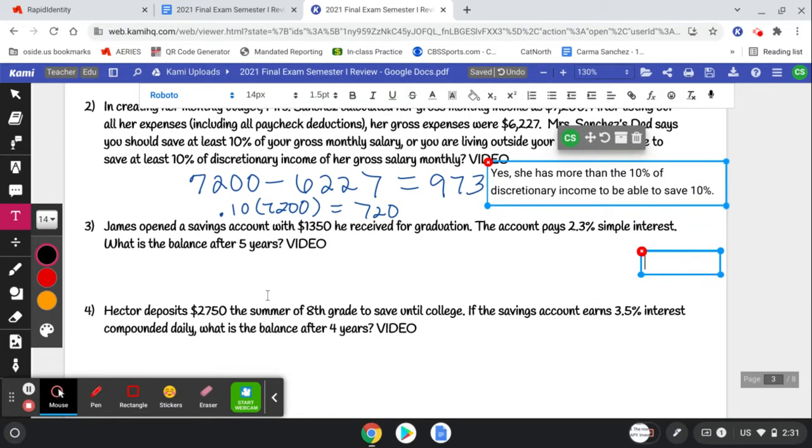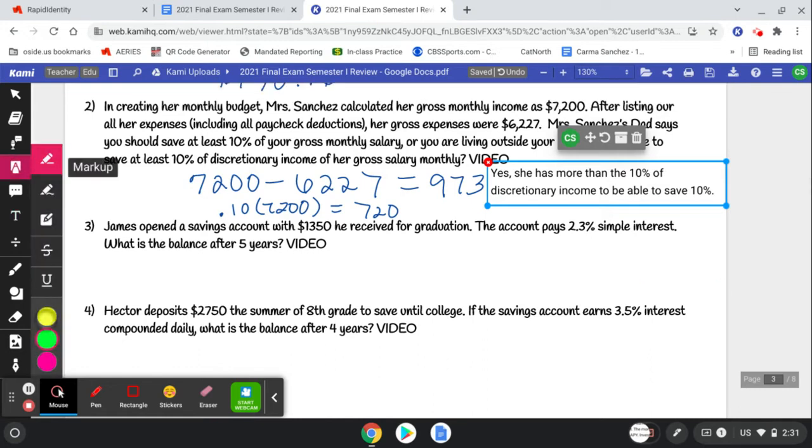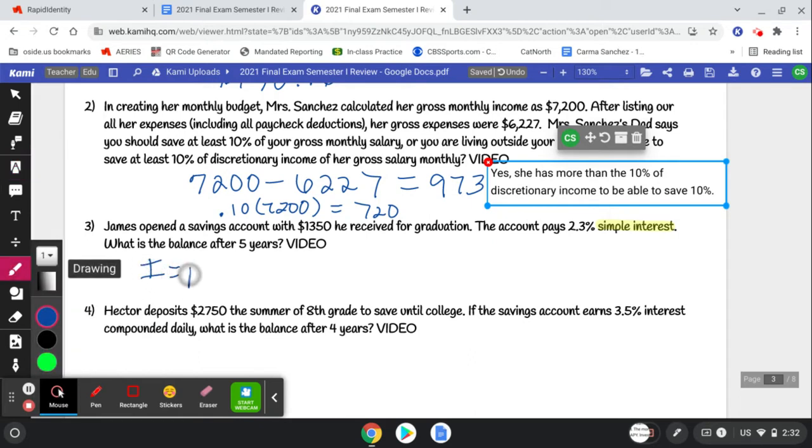James opens a savings account with $1350 he received for graduation. The account pays 2.3% simple interest. What's the balance after five years? We notice that this says simple interest, so we know we can go up to that banking sheet and use the simple interest formula. Do you remember it? I equals PRT.